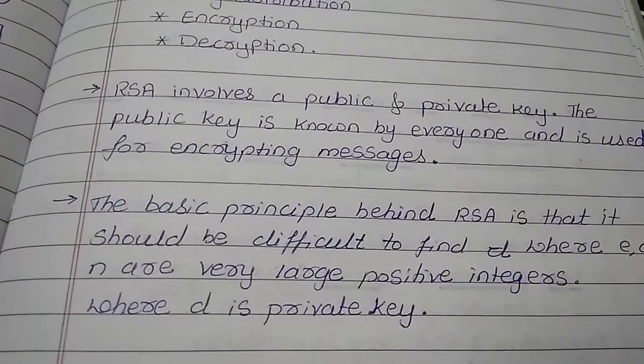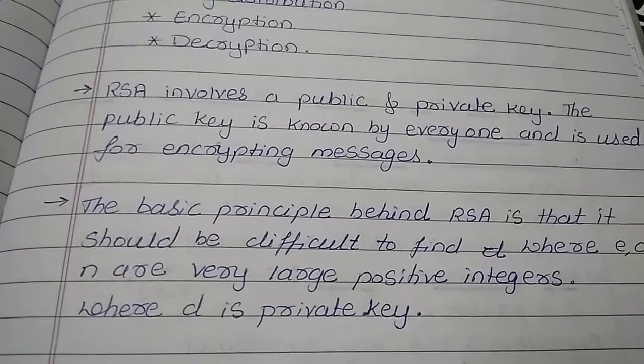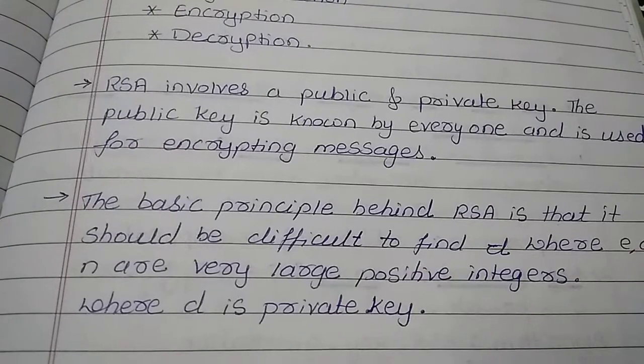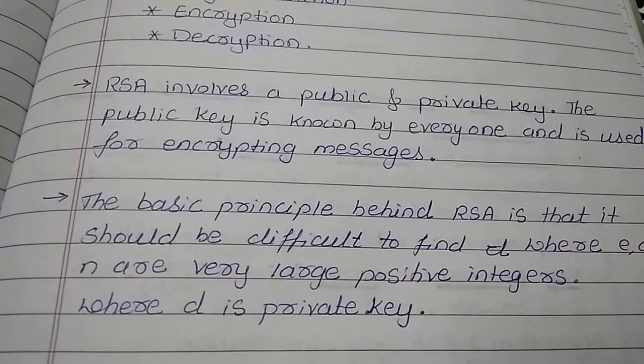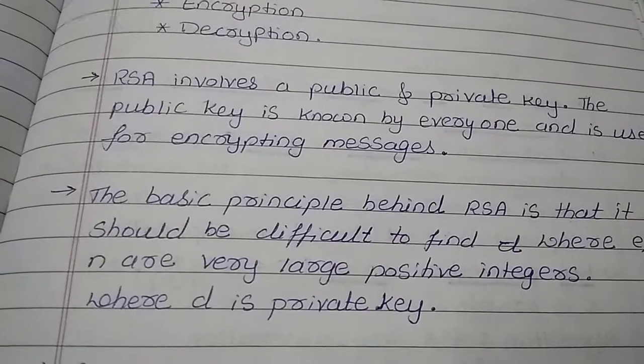RSA involves two keys, public and private. The public key is known by everyone and is used for encrypting the message whereas private key is kept private and used for decrypting the message.